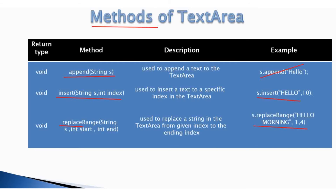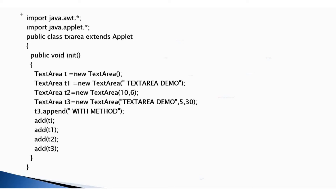This is a demonstrative program of TextArea. Let's see the program. These are the import lines, where AWT is used for the TextArea class and applet is used for the Applet class. This is the init method of the applet. Here we create a TextArea object named t with an initial string 'TextArea Demo'.